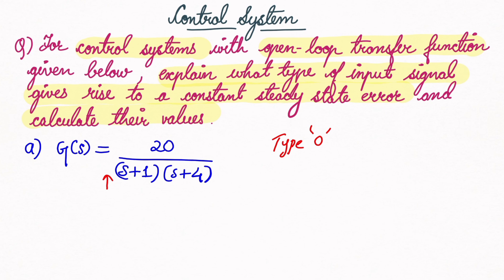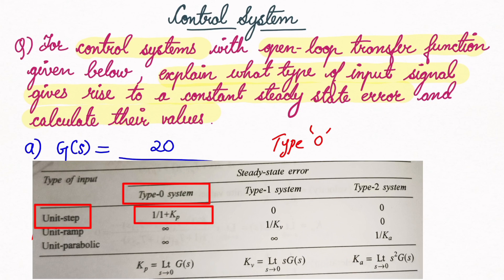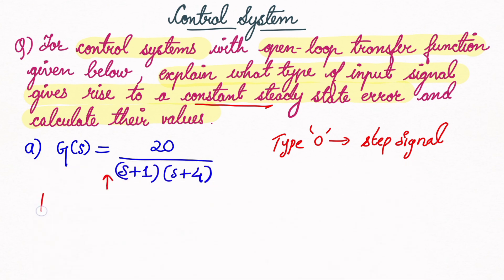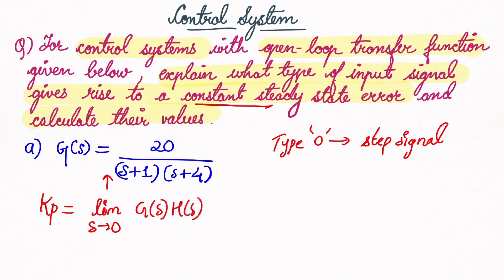For a Type 0 system, only a step signal gives rise to a constant steady state error. A unit step signal will give rise to steady state error, so we need to find the Kp value. Kp is equal to the limit as s tends to 0 of G(s)·H(s). Since H(s) is not given, it is a unity feedback system, so H(s) = 1, and we take only the G(s) value from the question.